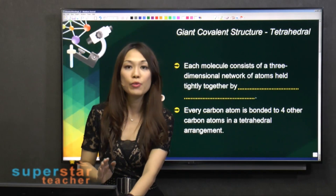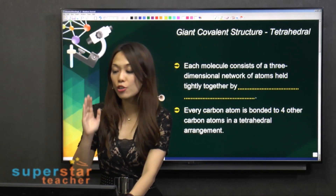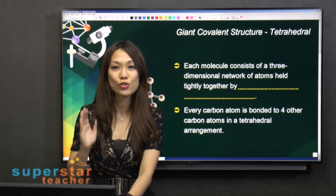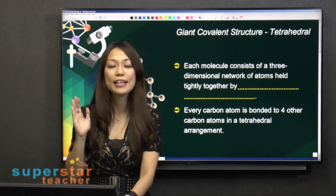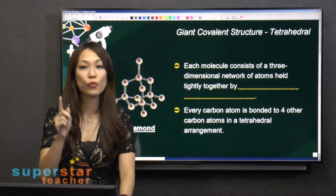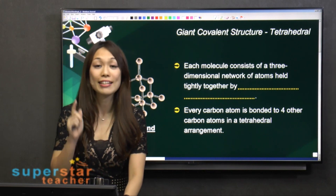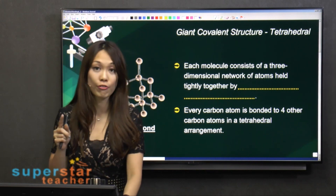For this segment, we're going to look at the giant covalent structure. We're going to focus on diamond and graphite.